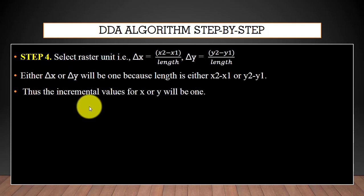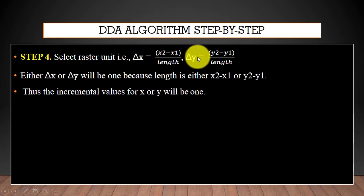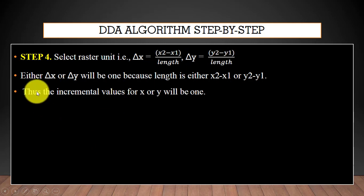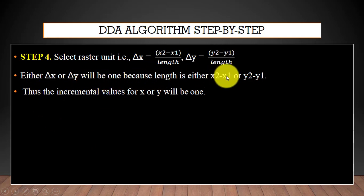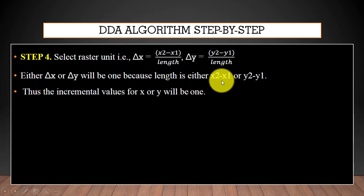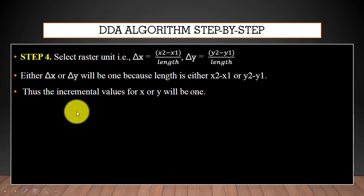In step 4 we will select the raster unit, where we update the values for Delta X and Delta Y using these equations. Either Delta X or Delta Y will be 1, because the length is either X2 minus X1 or Y2 minus Y1. Thus the incremental value for X and Y will be 1.